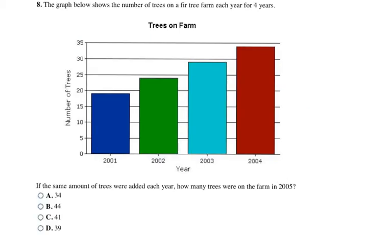Now we're looking at patterns that deal with graphs. The graph below shows the number of trees on a fir tree farm each year for 4 years. If the same amount of trees were added each year, how many trees are on the farm in 2005? So I look at the years 2001, 2002, 2003, 2004. 2005 is the one I'm looking for, so I'm just looking for the next one over.